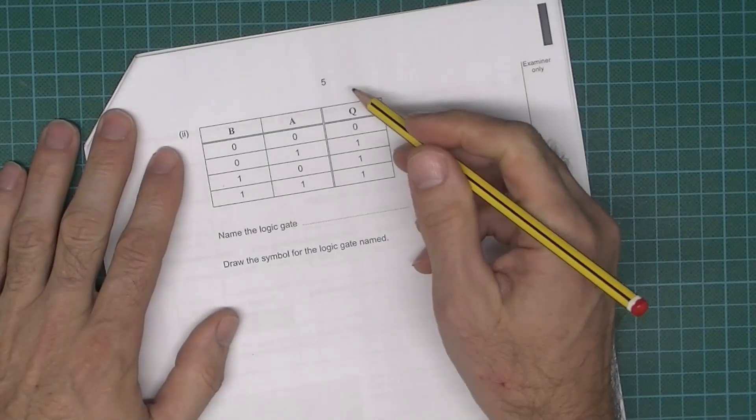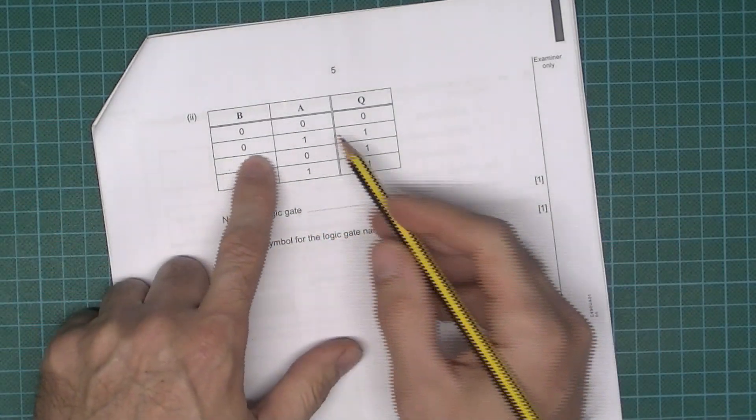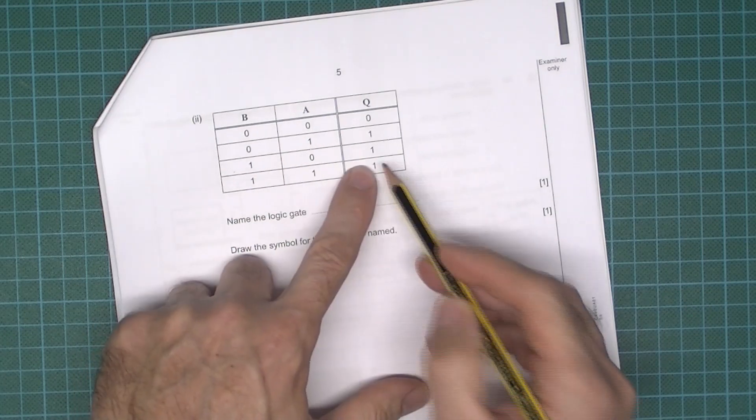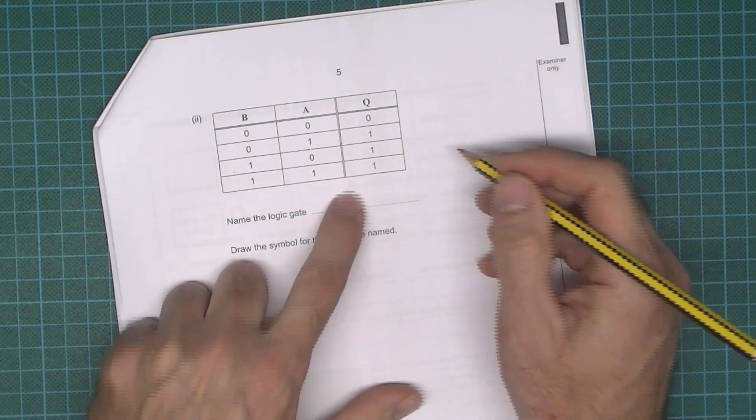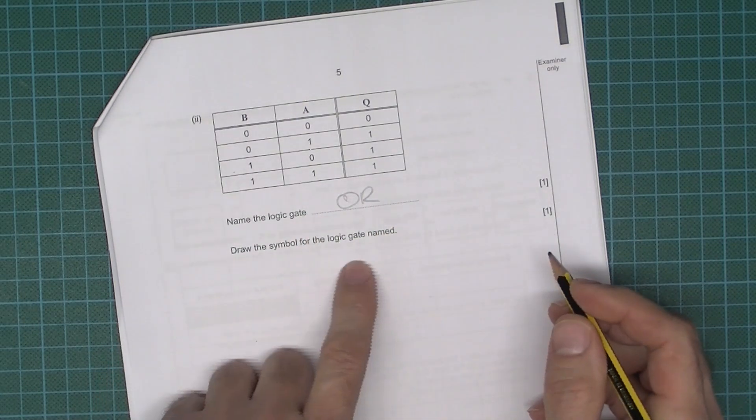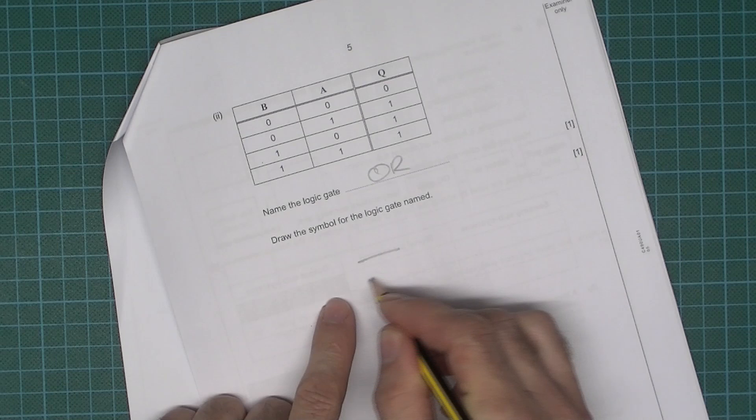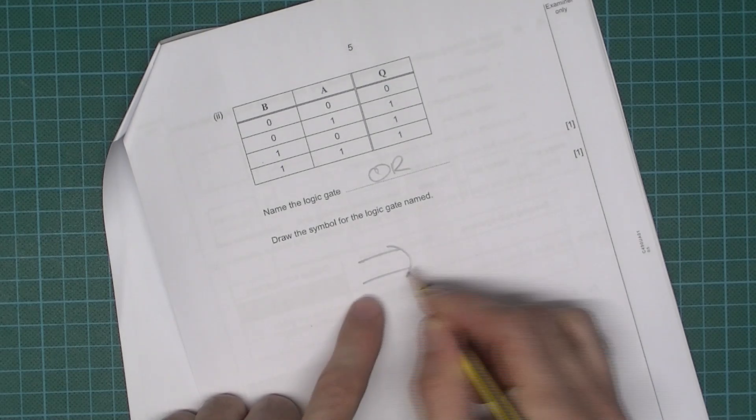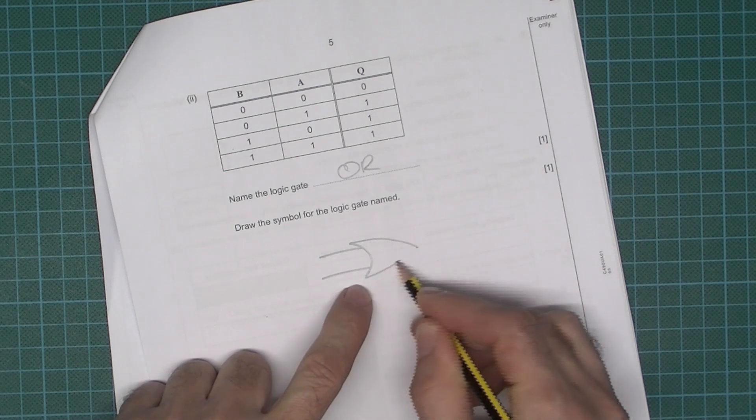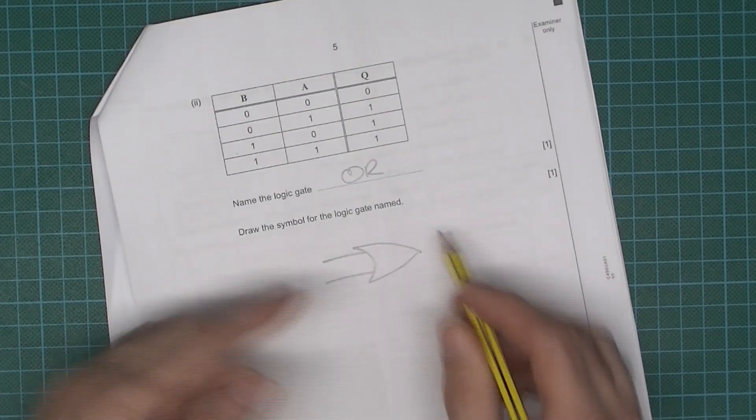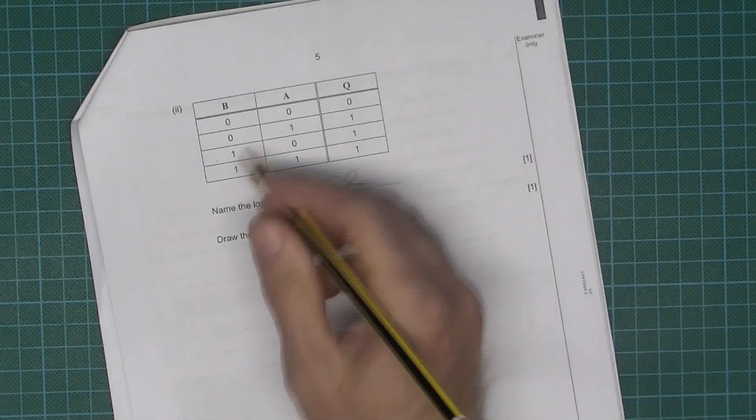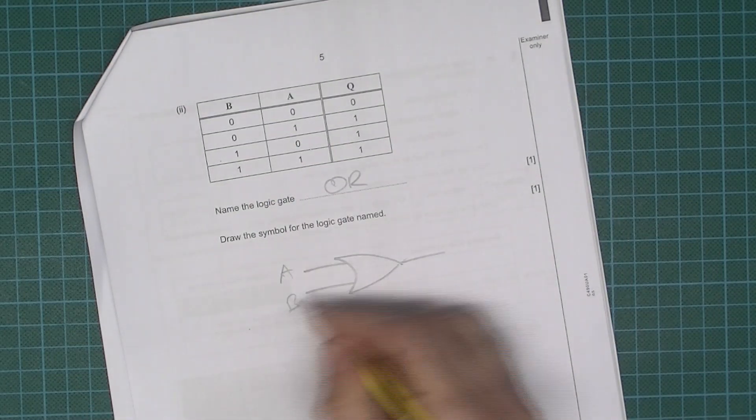Okay, so now we could identify this one. Hopefully you will see that if any of the inputs or all of the inputs are true, the output's true. So that is an OR gate, capital letters please. And draw the symbol. Make sure if you need to draw an OR gate, make sure that it's got that curved bit there and it goes down to a point like so.